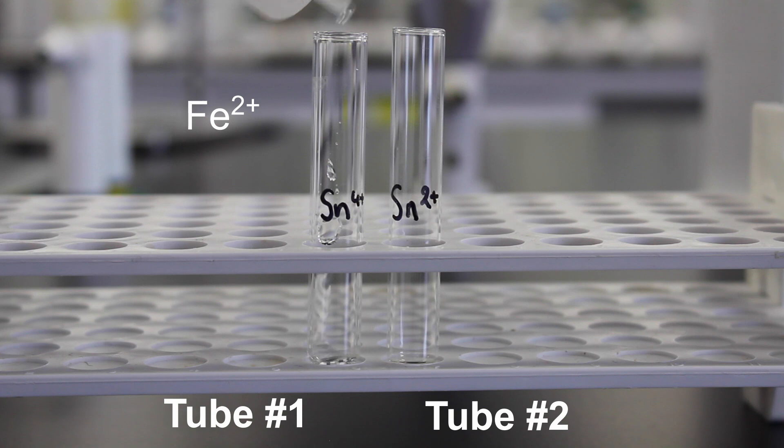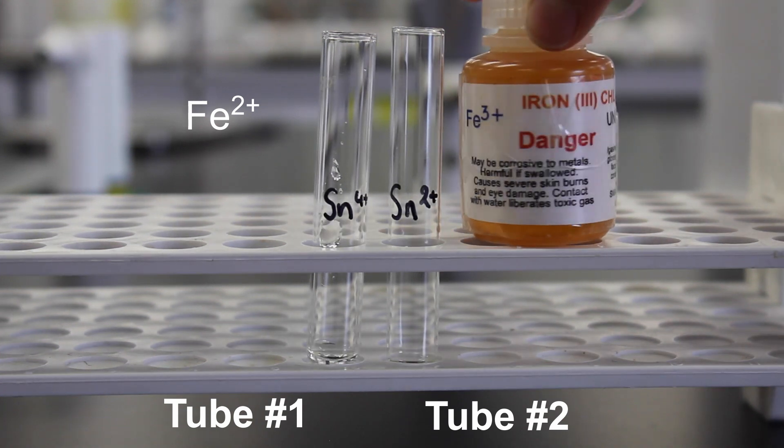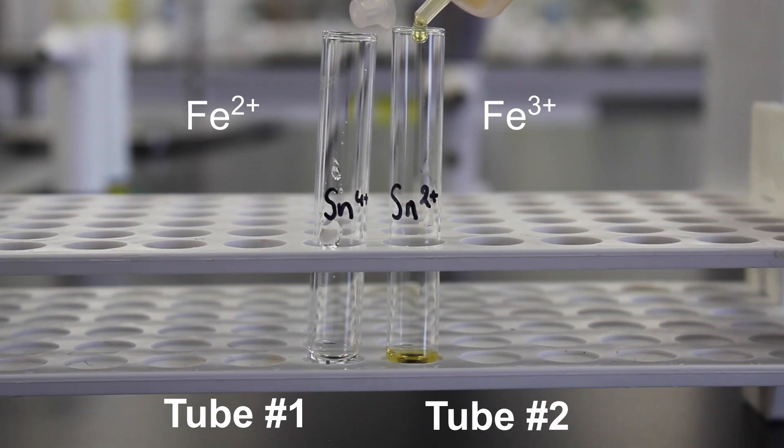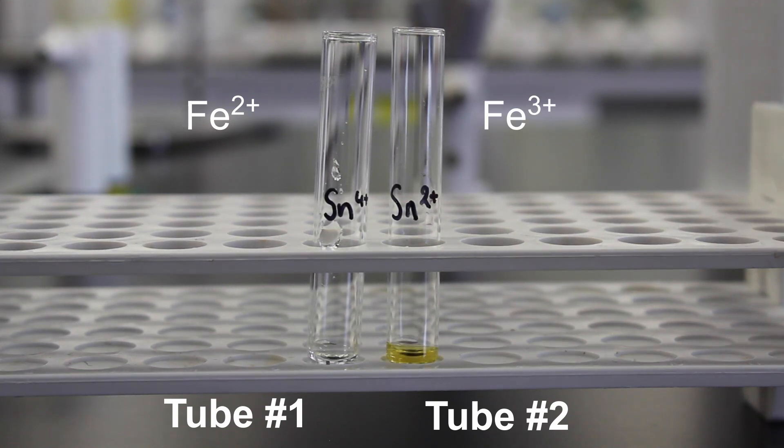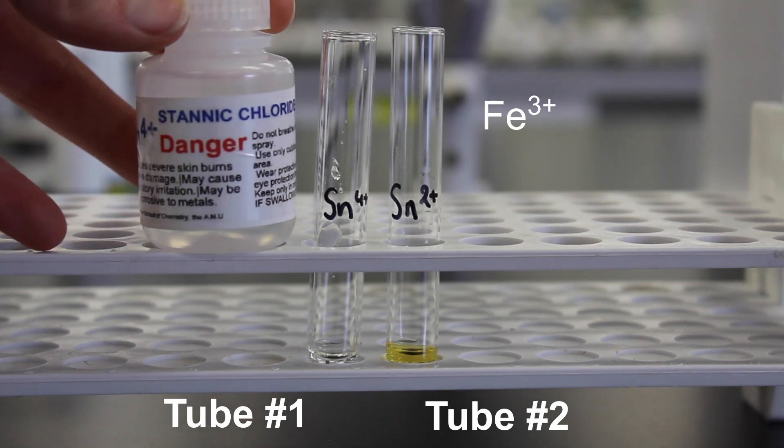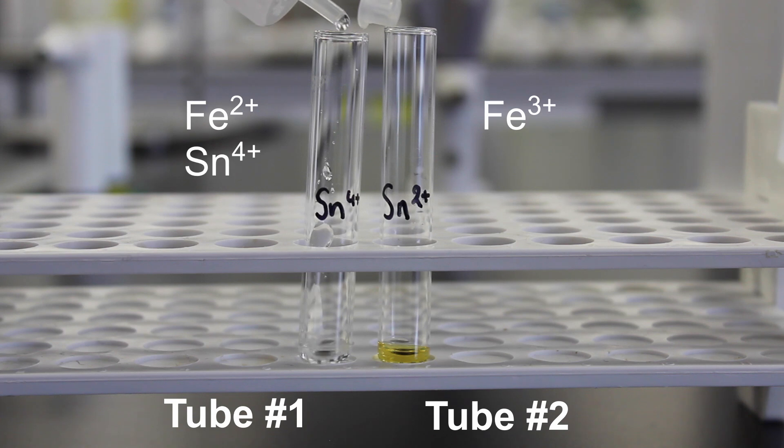Add a few drops of your iron 2+ solution to a test tube and a few drops of your iron 3+ solution to a second test tube. Now add your appropriate tin species to each respective test tube.